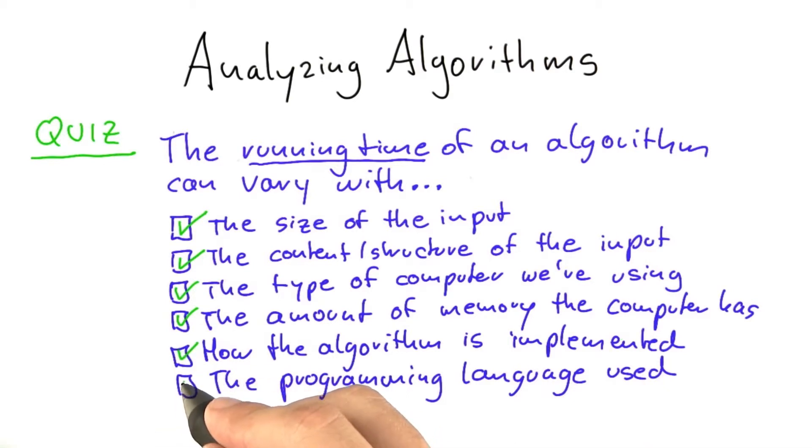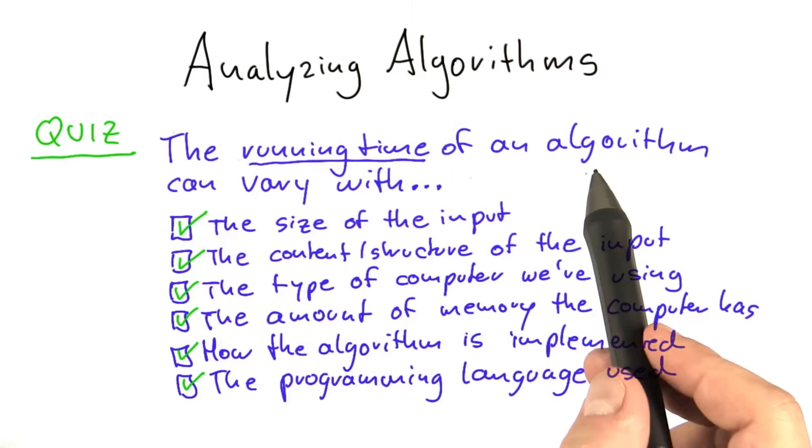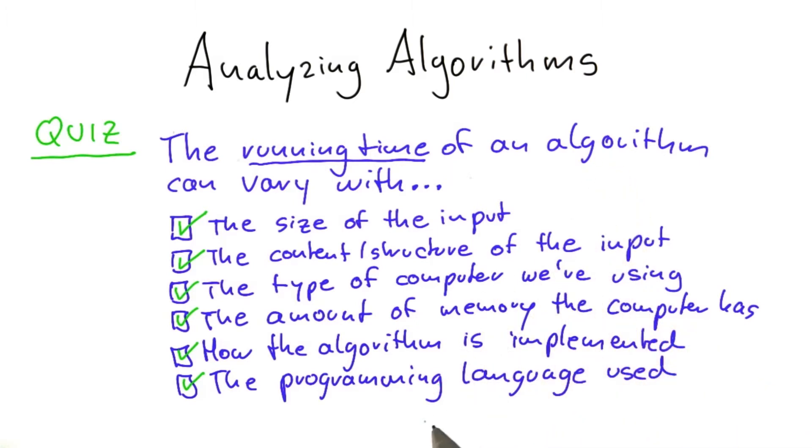And finally, the programming language used is a debate that many people like to have, but it's certainly a factor. There are some programming languages that will make an algorithm run a lot faster than other programming languages, and so you need to think about if efficiency matters, you'll usually also use a programming language that is suited for that.